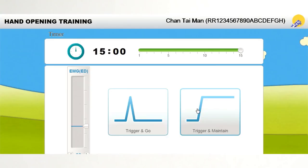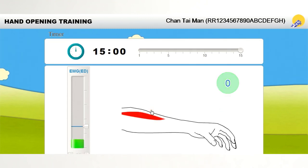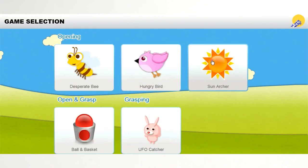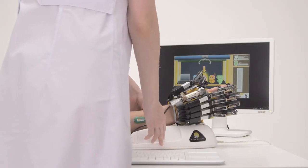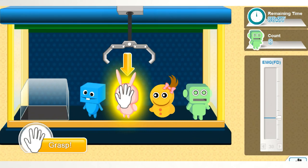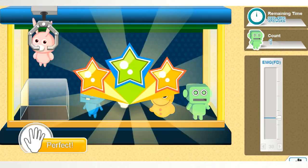Hand of Hope has passive and active training modes for hand opening and grasping. Five different games with four difficulty levels help the patient make the rehabilitation process more interesting and fun with audio and visual stimulation.